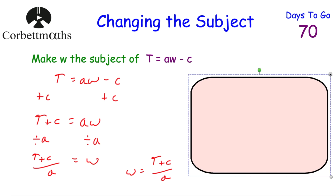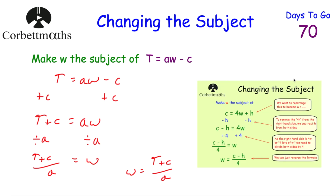Here's the revision card example, where we've been asked to make W the subject of C = 4W + H. If you want to get W on its own, the first step is to subtract H from both sides, so you get C − H = 4W. Then divide both sides by 4, and you get W = (C − H) / 4.